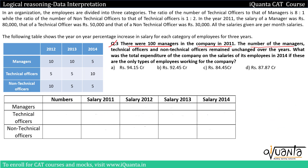For Q3: 100 managers were in the company in 2011, with employee numbers unchanged over the years. From the problem setup, technical to managers ratio is 8:1 and non-technical to technical is 1:2. We need to find the combined ratio of managers to technical to non-technical officers and then calculate total salary expenditure in 2014.